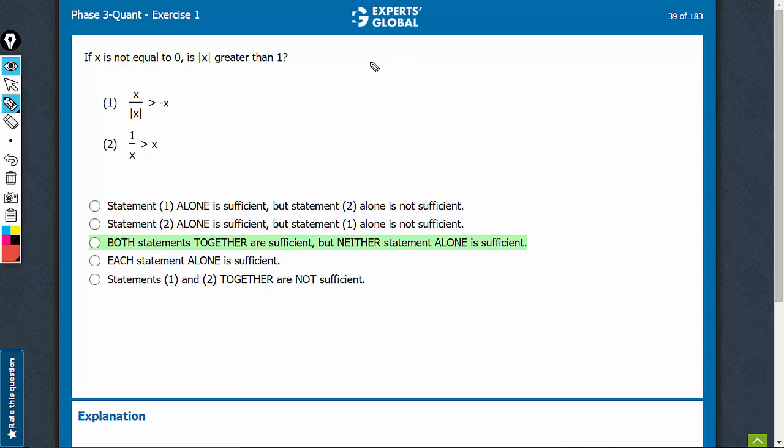x over |x| is going to be either plus 1 or minus 1. But see, the ratio is greater than minus x, and therefore, x has to be something positive.